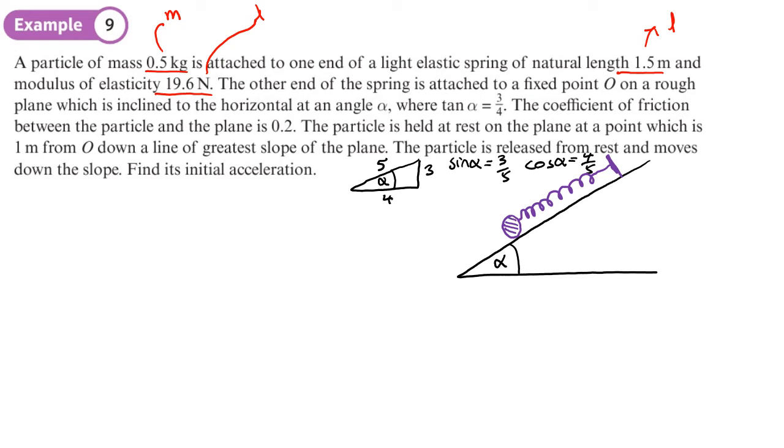So that's probably enough of my spring. I've got a mass here. Now let's think about this. The natural length of the spring is 1.5. The particle is 1 metre down from the end of the spring. So the spring is in compression. That means there's thrust. The spring wants to move this way.